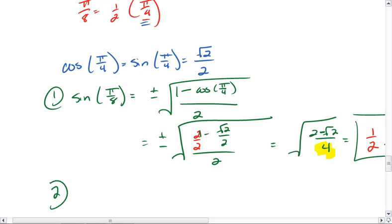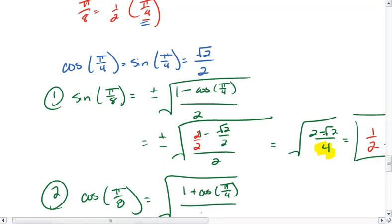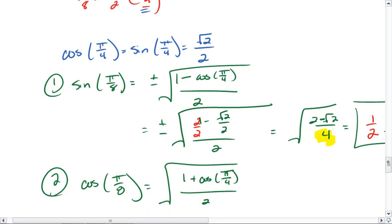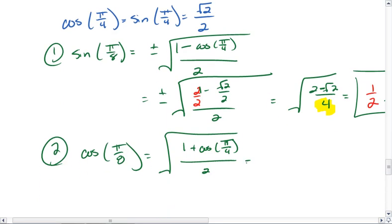For cosine, we know that cosine of pi 8 equals the square root of 1 plus cosine of pi 4ths, all over 2, which equals the square root of 1 plus root 2 over 2 all over 2.